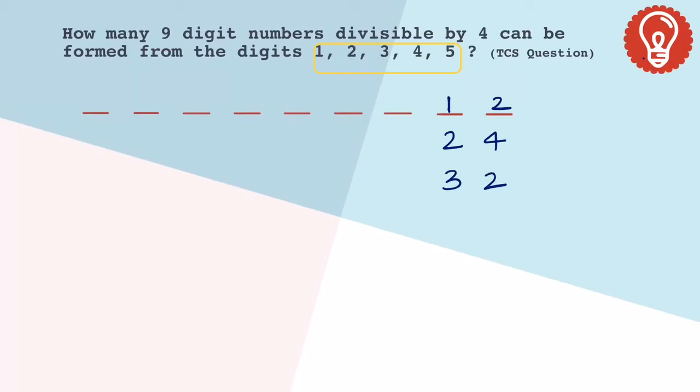Therefore, if the last two digits of the nine-digit number is any of these, then the number is divisible by 4.